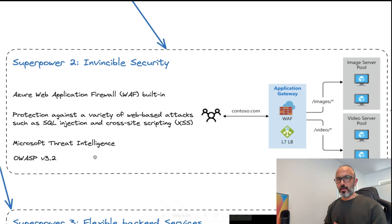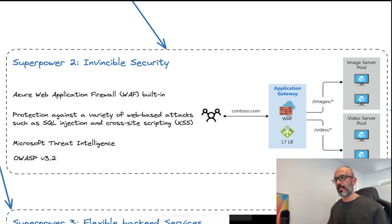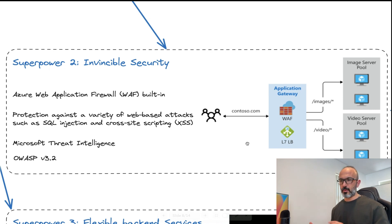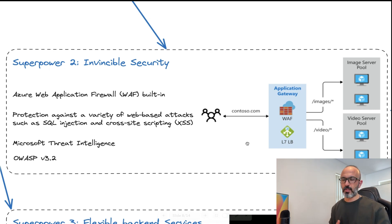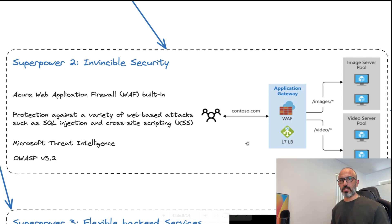The next superpower of Azure Application Gateway is that it is both a layer 7 load balancer and a web application firewall built in — two components in one. The web application firewall protects you against common attacks that target web apps, such as SQL injection and cross-site scripting, using Microsoft Threat Intelligence and the OWASP standard — specifically version 3.2, which contains a set of rules about those threats and attacks. This is what the web application firewall protects you against.